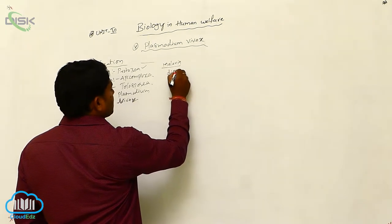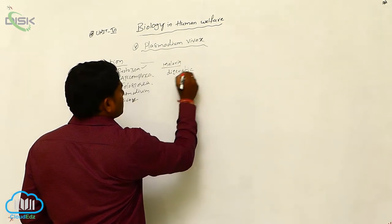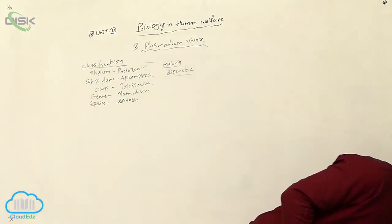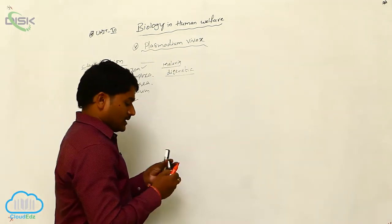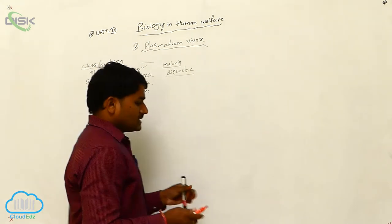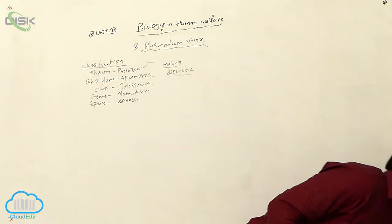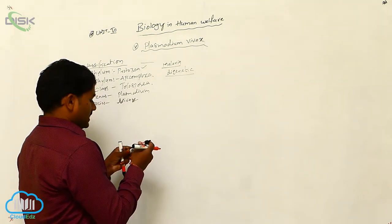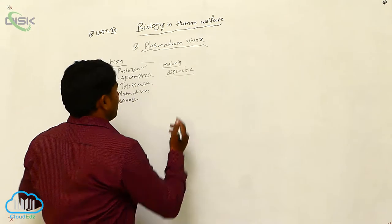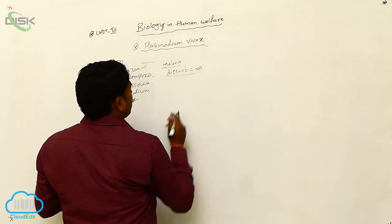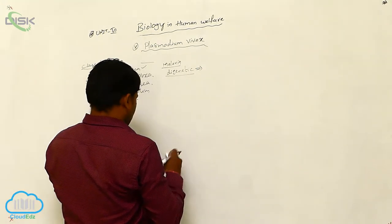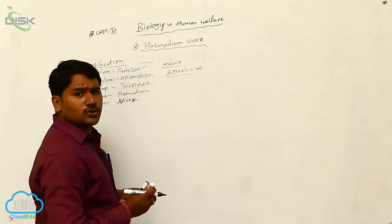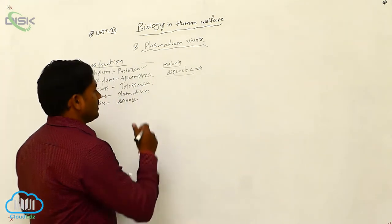This is a digenetic parasite. Why we are calling it a digenetic parasite? Because it lives in two hosts. As it lives in two hosts, it is called a digenetic parasite. If it completes its life cycle in two hosts, then it is said to be a digenetic parasite.